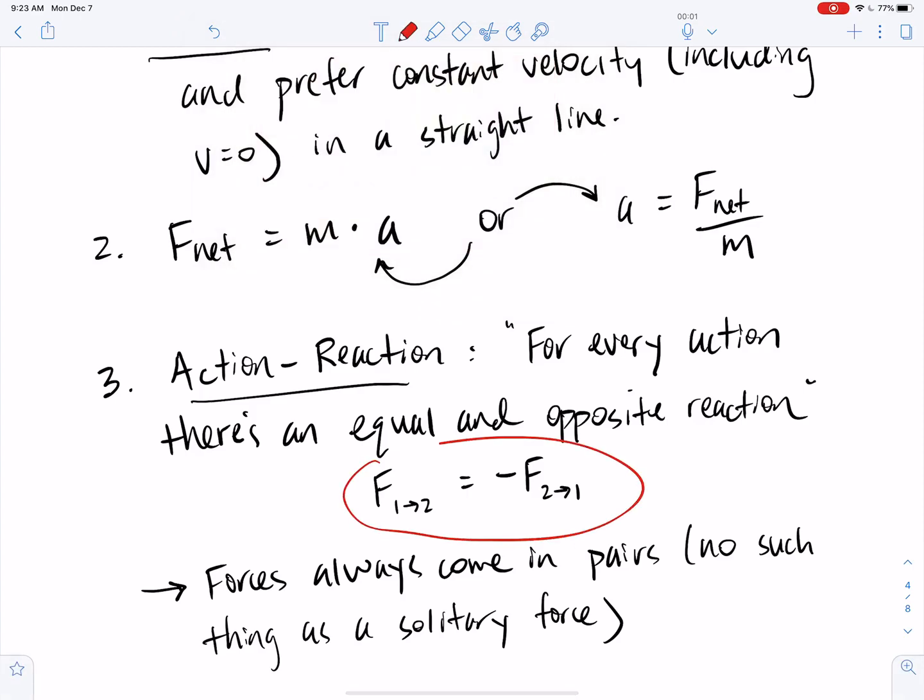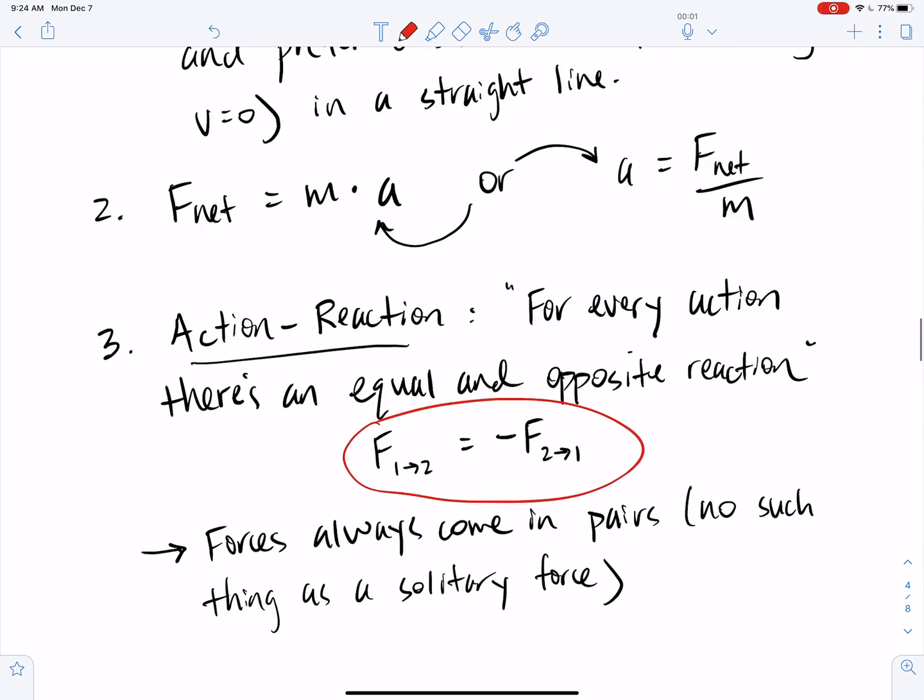And that's written by this sort of silly little equation here. But basically, if I were to hit you in the shoulder with a force, your shoulder would hit me with the same force in the opposite direction. So you can't hit without being hit back. Forces always come in pairs. There's no such thing as a solitary force.